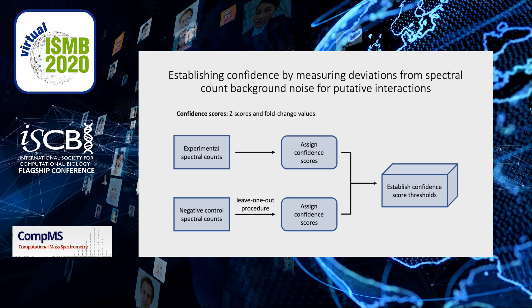Prior to building a classifier, we first established confidence in our putative interactions by assigning them scores. These consisted of z-scores and fold change values, and we used these scores to establish thresholds.